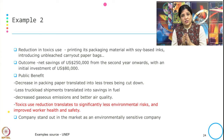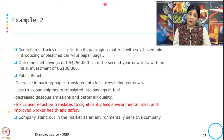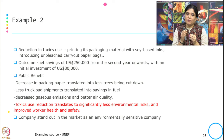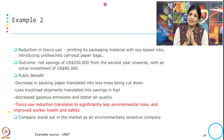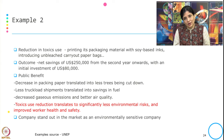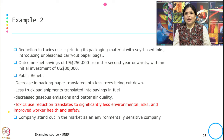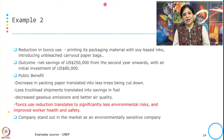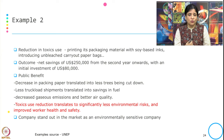This is the private benefit — the financial benefit they gained from changes in design. But the public benefit from these cleaner production options is that a decrease in packing paper translated into fewer trees being cut down, less truck load shipment translated into fuel savings, a decrease in gaseous emissions and better air quality, and toxic use reduction translated significantly into less environmental risk and improved workers' health and safety. The intangible benefit the company received is that they are known as an environmentally sensitive company in the market, which increased their brand value.